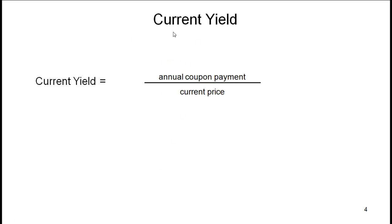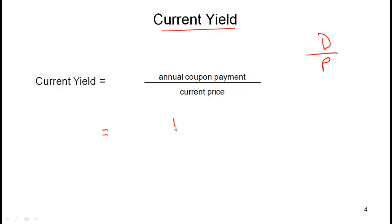The first measure is current yield. Current yield is simply the annual coupon payment divided by the current price — analogous to the dividend yield in the stock world, where we look at the dividend divided by the stock price. In the bond world, current yield is the annual coupon payment divided by current price. In the example I just gave, the coupon payment is 100 and the price paid is 950, so the current yield will be 10.53%. This is a simple measure.